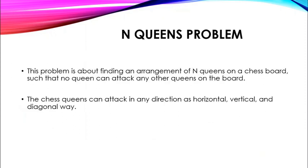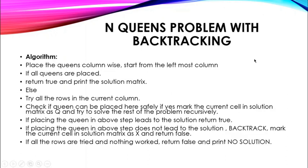Let's start by talking about what is the N-queens problem. This problem is about finding an arrangement of N queens on a chess board such that no queen can attack any other queens on the board. The chess queens can attack in any direction: horizontal, vertical, and diagonal.